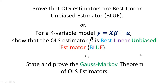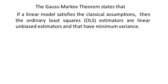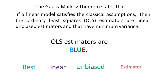The Gauss-Markov theorem states that if a linear model satisfies the classical assumptions, then the Ordinary Least Squares (OLS) estimators are linear and unbiased, and have minimum variance. In other words, OLS estimators are BLUE: B for Best, L for Linear, U for Unbiased, and E for Estimator.